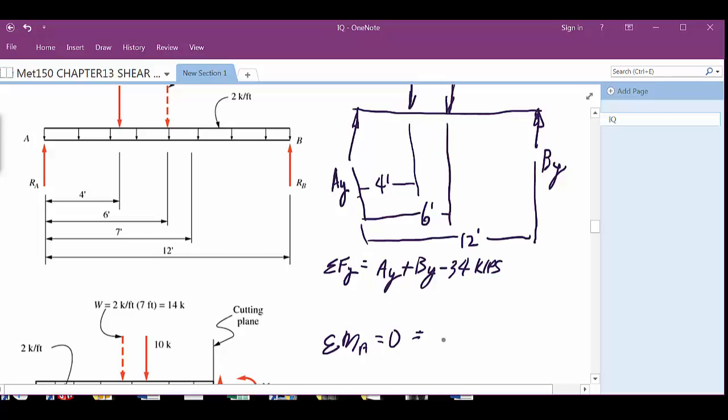Sum the moment at, oh, we'll do it at A. So we've got 10 times 4, right? And that is negative minus 24 times 6 plus B_Y times 12. Somebody cheating, look in the book, what is it? Is it in there? It's 15.33. Yeah, 15.33. 15 point. All right, can we trust the book anymore? 3-3? Yeah, really. Yeah, and then they're showing 18.67 for A.